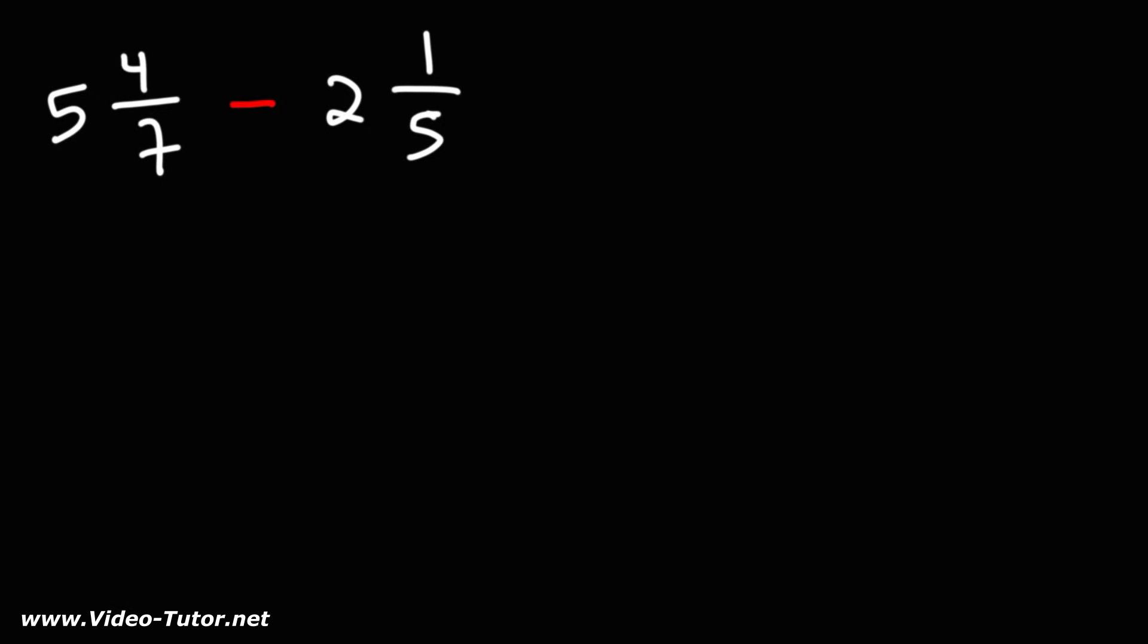In today's video lesson, we're going to talk about how to subtract mixed numbers. So let's begin. 5 and 4 sevenths, we can write that as 5 plus 4 over 7. 2 and 1 fifth is 2 plus 1 fifth.